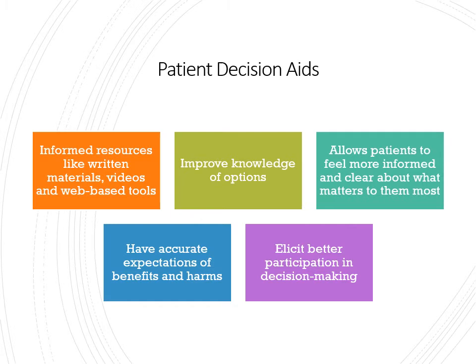The goal of the written resources is so that patients understand their options. On page 211 there's a chart showing what happens if you choose no treatment versus what happens if you get the treatment being recommended. This allows your patients to feel more informed and clear about what matters most to them, letting them choose what kind of treatment they want and feel comfortable in that decision because all the outcomes are there.